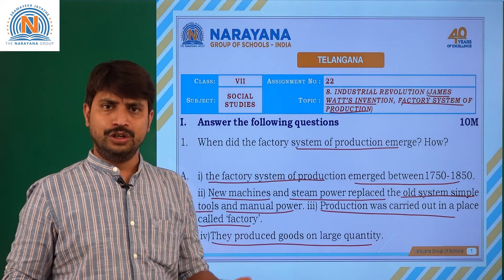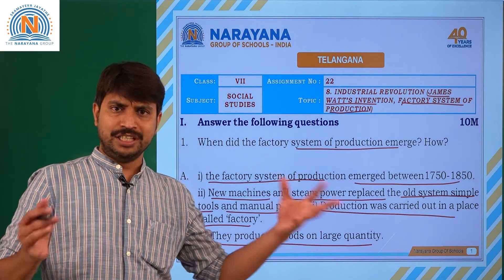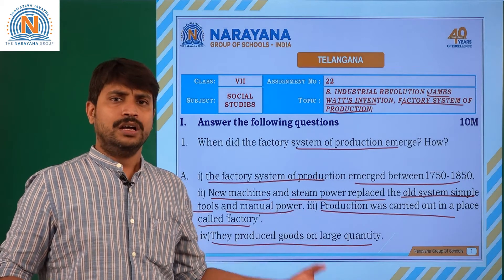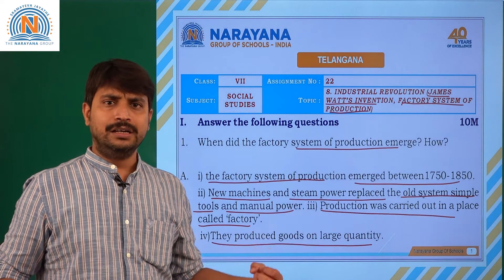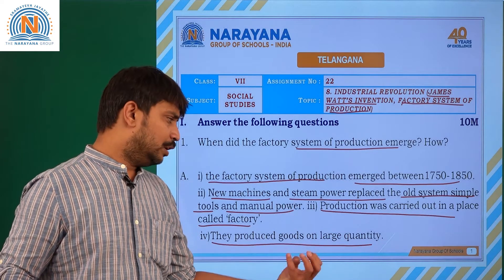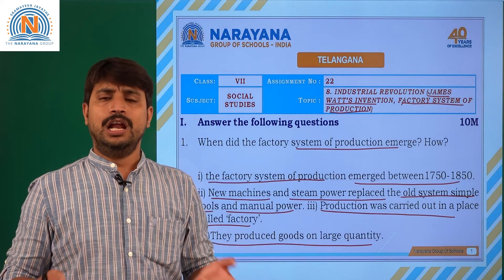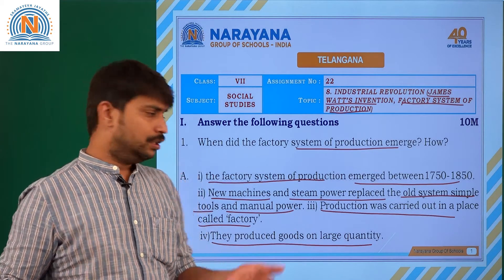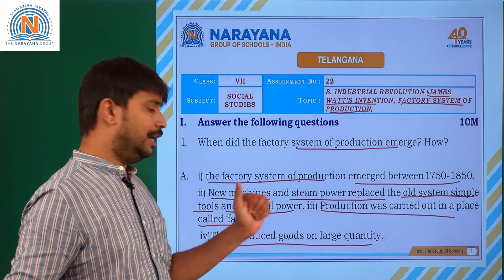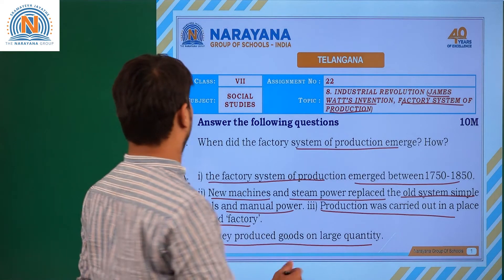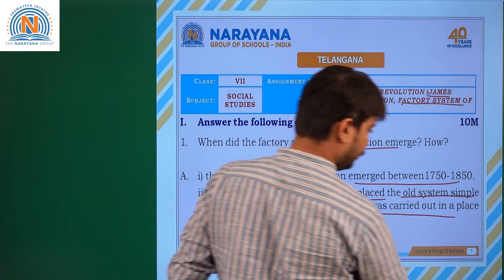They produced goods in large quantities. When factories and machines were established, goods could be made immediately and in large quantities. Clear children, we are moving to the next question.